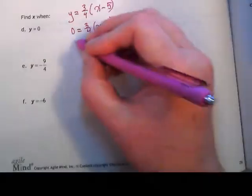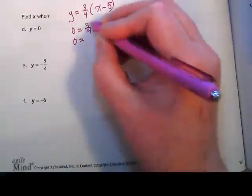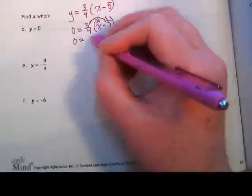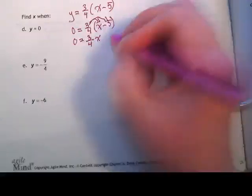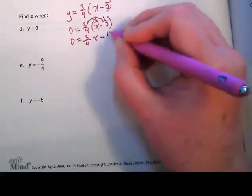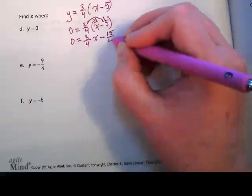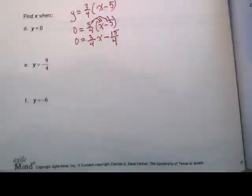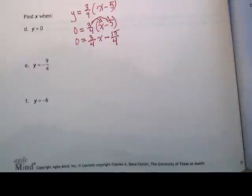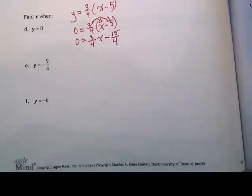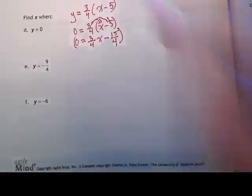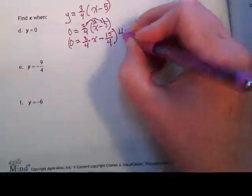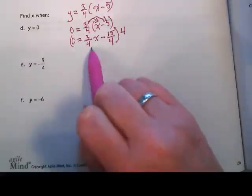The first thing we want to do is multiply that three-fourths using distributive property to both things inside the parentheses. So we get three fourths x minus 15 over 4. Now at this point I'm seeing that I have fractions for both of them with a denominator of four. I'm going to multiply the entire equation by its reciprocal four so then I'm not going to have to deal with having fractions anymore.